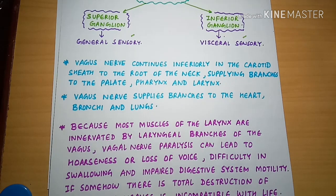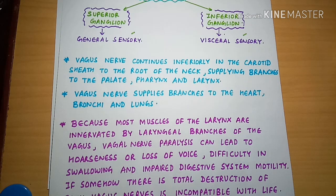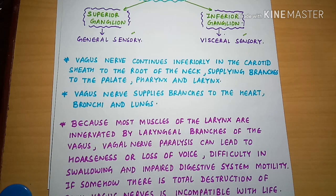Vagus Nerve paralysis also causes difficulty in swallowing and impaired digestive system motility, as the parasympathetic fibres control these functions. Total destruction of the Vagus Nerve is incompatible with life, because its parasympathetic division innervates the heart, lungs, and digestive system.